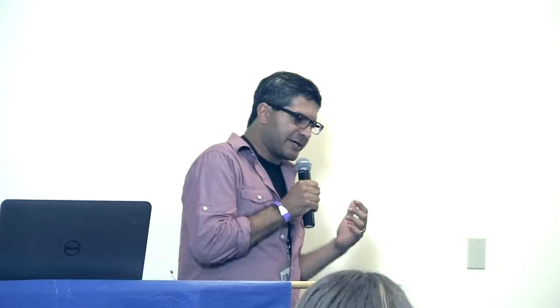As computer scientists, we want to find a recipe. There are two major tricks. One is to divide this big graph into smaller ones that fit into memory and use a serial in-memory algorithm to do some computation, then in future rounds merge the results — some version of divide and conquer. There's another class that uses the parallel nature: do computations in parallel and keep merging them. I'll give you one quick example of each.